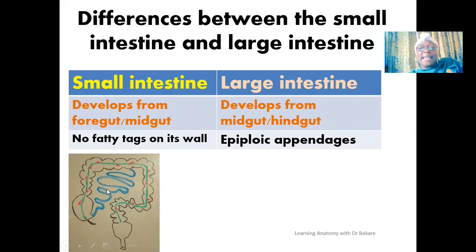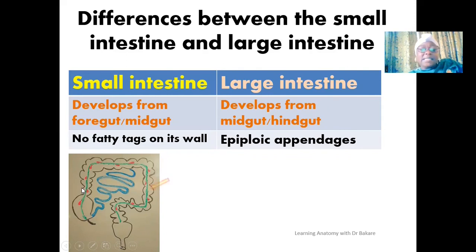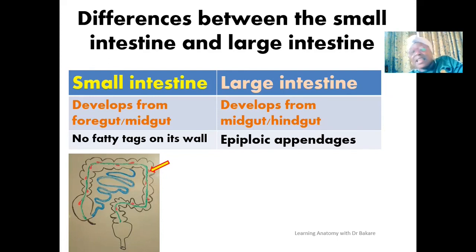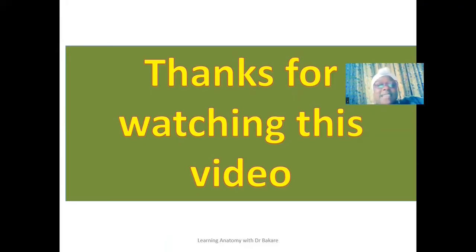Also, on both sides of the teniae coli — which runs along the large intestine and causes haustra formation — we have fatty tags called epiploic appendages, highlighted in red. These epiploic appendages are not seen on the wall of the small intestine. Feel free to add more differences in the comment section. Thanks for watching — let's meet again.